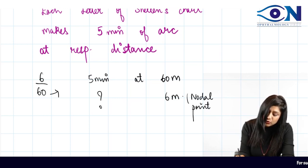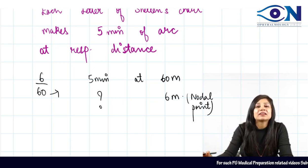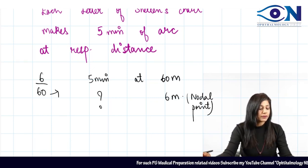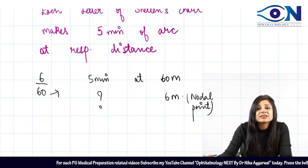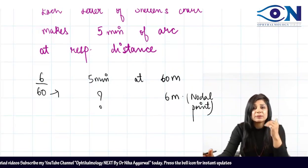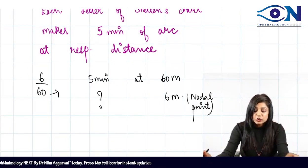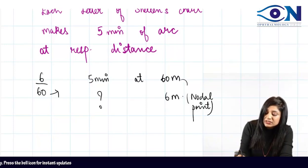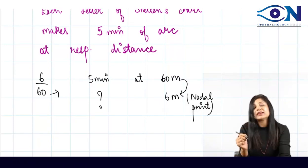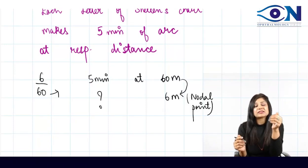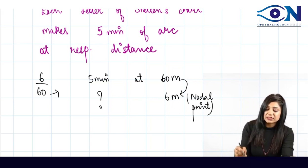When the patient is standing at a distance of 6 meters, the nodal point will be at 6 meters. The patient is coming closer to the letter from 60 meters to 6 meters. When you're decreasing the distance and the patient is going closer to the letter, there will be an increase in the angle.